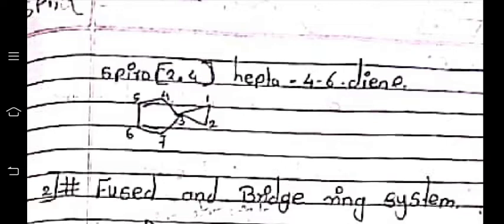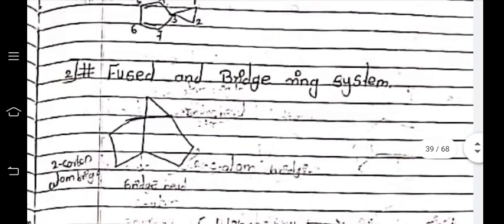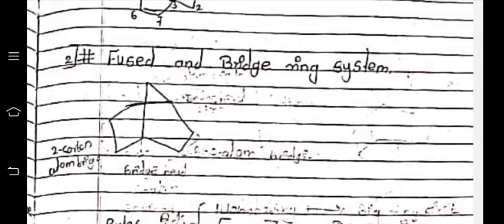I hope you all understand which types of compounds we call spiro compounds. In the next lecture, we will study fused and bridge ring systems. Thank you very much. Practice these structures many times so that you can understand and remember them — if you do practice, there is no chance of confusion. Remind all these things regularly after one day, two days.